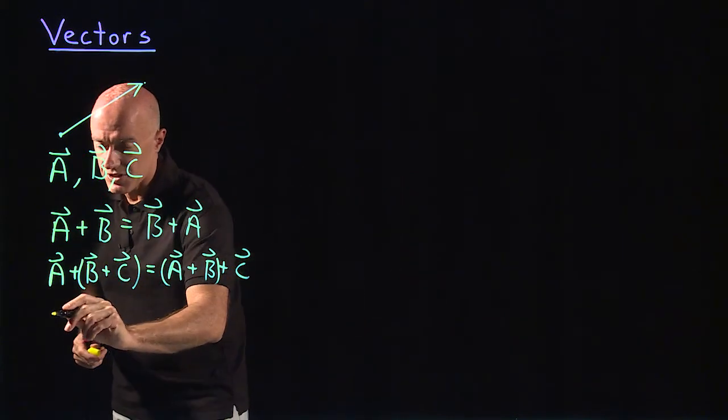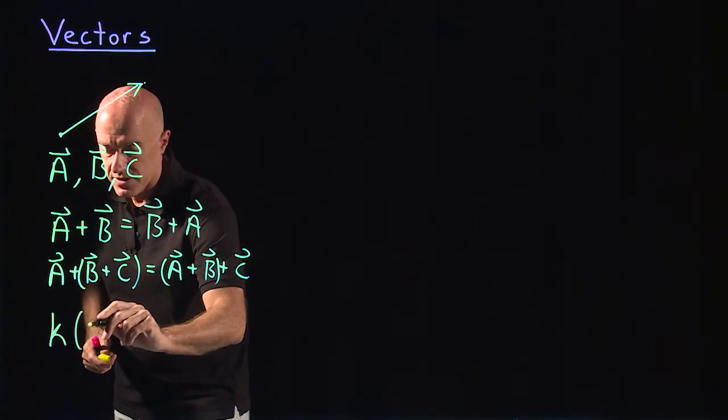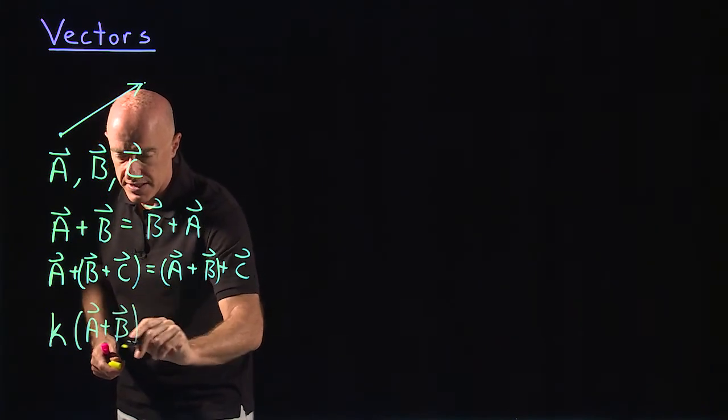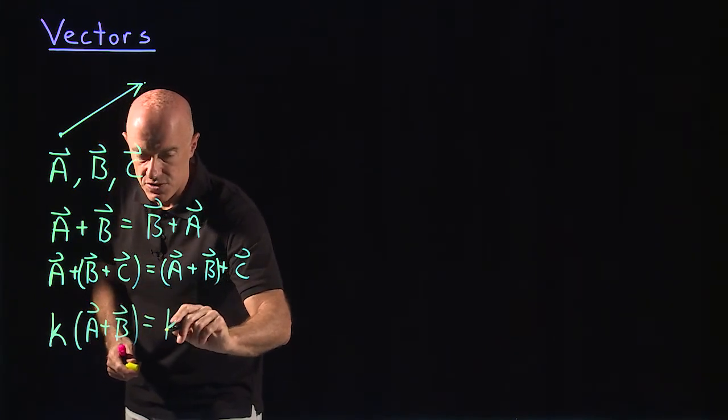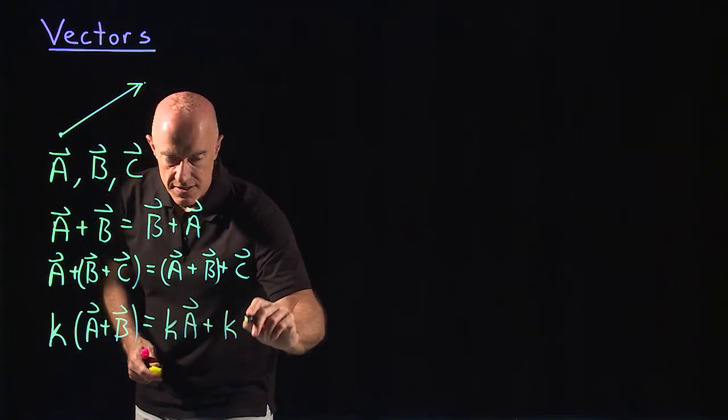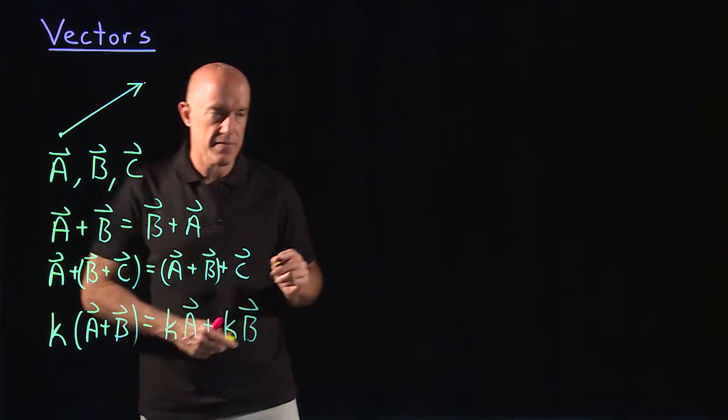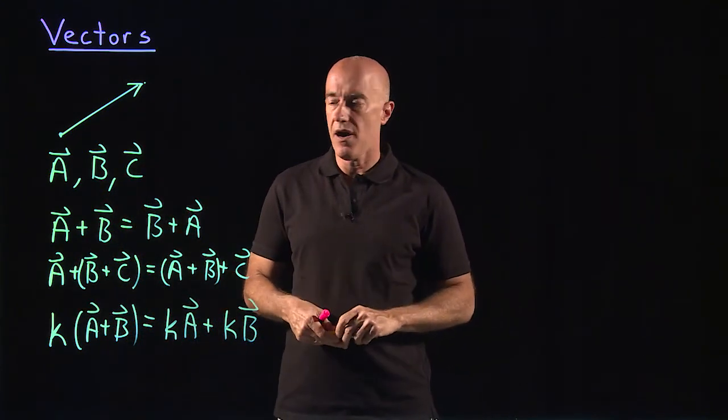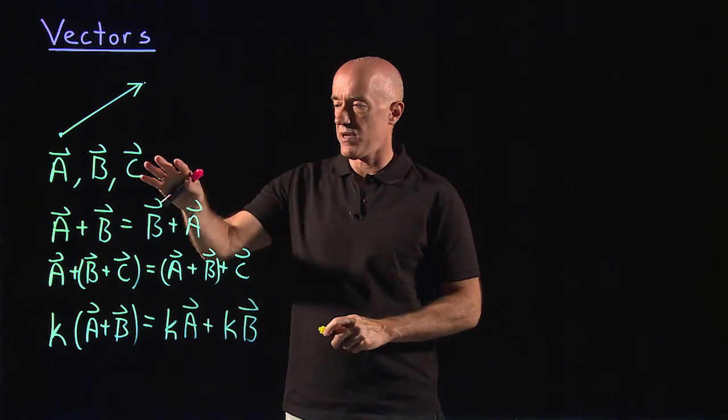Scalar multiplication is distributive. So k times (a plus b) equals k a plus k b. These are the basic properties of algebra associated with vectors.